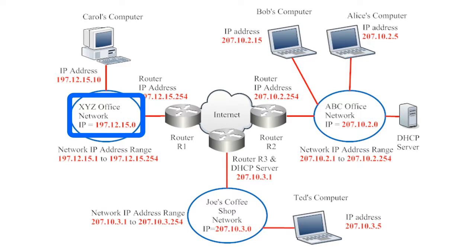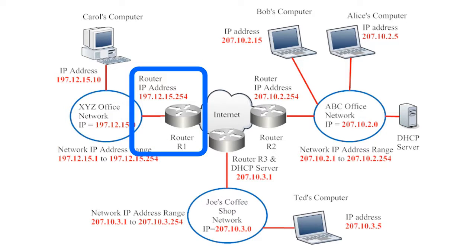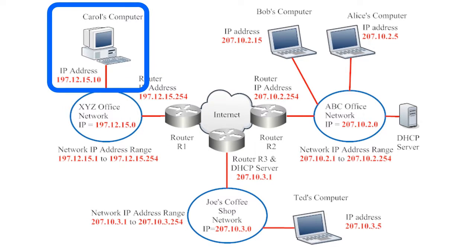Device IP addresses ending in 0 are restricted, and those ending in 255 are also reserved. So in practice, the range of possible IP addresses for devices on this network are .1 to .254. The router at the XYZ office network has been assigned the IP address ending in .254, while Carol's desktop computer has been assigned the IP address ending in .10. There are 252 IP addresses remaining in the available range.